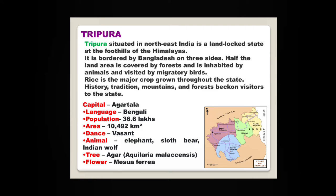Tripura, situated in northeast India, is a landlocked state at the foothills of the Himalayas. Landlocked means it is bounded by states on all sides. It is bordered by Bangladesh on three sides. Half the land area is covered by forest and is inhabited by animals and visited by migratory birds. Rice is the major crop grown throughout the state. History, tradition, mountains and forests beckon visitors to the state. The capital of Tripura is Agartala.